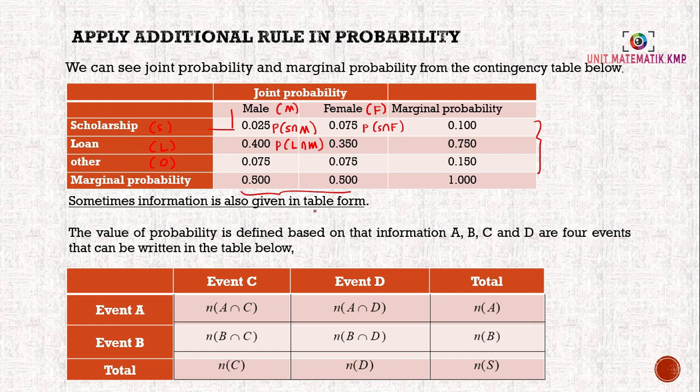Sometimes the information is also given in table form. Instead of writing probabilities in the table, they might write in the form of numbers. The value of probability is defined based on the information A, B, C, D as events that can be written in the table below. Your table might have numbers like 18, 10, 2, 4, depending. So here we don't call it joint probability because it shows numbers. And then, at the last end here, the number must be the total of the sample space.